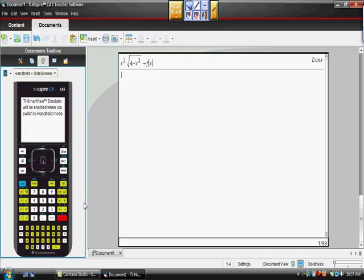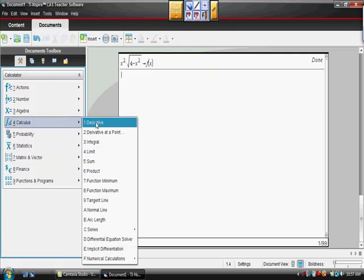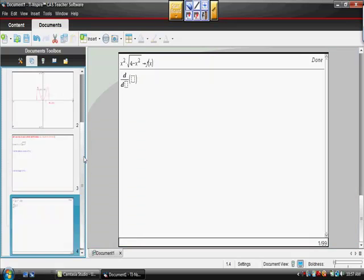Now what I want to do is take the first derivative, because we said that to find our critical values, we want to know when the first derivative is equal to 0 or undefined. So I'm going to go to my calculator, choose calculus, so menu then 4, then pick derivative. We're going to take a derivative in terms of x.